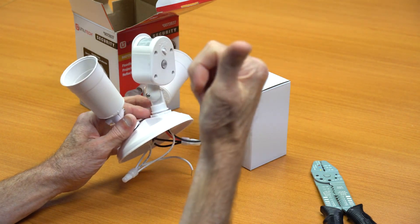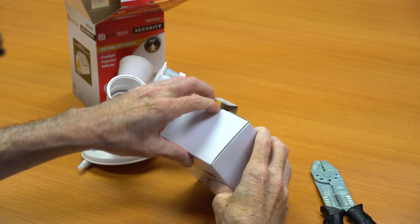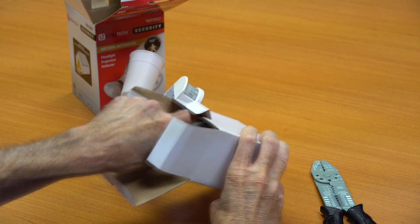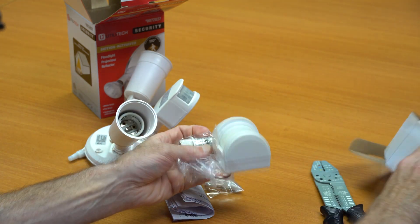So what I'm going to do is replace the existing motion sensor with our new floodlight sensor. Before we do that though, let me just take a quick look at what's inside the box. We've packed it with an install guide, some mounting hardware, and then the sensor itself.